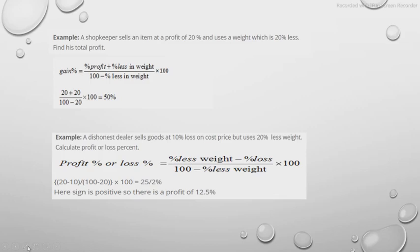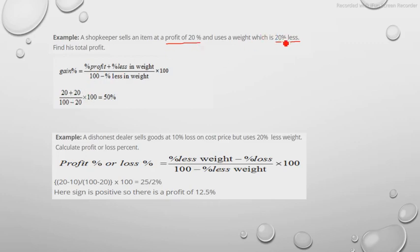He is selling the item at a profit of 20% and also using a weight which is 20% less than actual. Using the formula, the gain percent is: (20 + 20) / (100 − 20) × 100. This gives the answer very easily in a short interval of time.